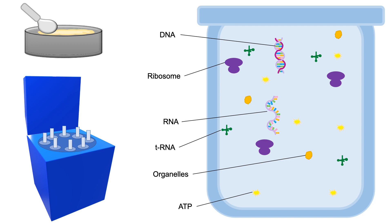E. coli cells were crushed, centrifuged, and purified to obtain a cell-free supernatant containing DNA, RNA, ribosomes, ATP, and organelles, which were then mixed with radio-labeled amino acids and an RNA template.